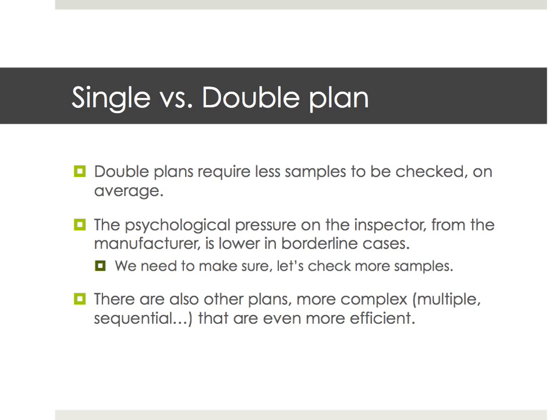Now let's talk about single versus double sampling plans — this was covered in another video. What I want to touch on here is that double plans are more efficient than single plans; they require fewer samples to be checked. Another big advantage of double sampling plans is that in cases that are not very clear — a little bit borderline — in a single sampling plan, there's a lot of pressure from the supplier: the limit is 10, you find 11, but is this really a defect?